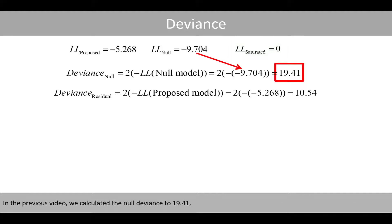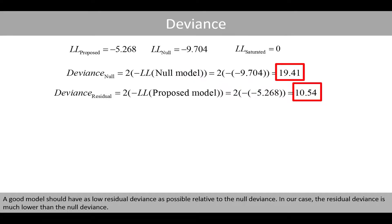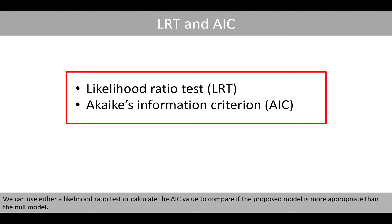In the previous video, we calculated the null deviance to 19.41 and the residual deviance to 10.54. A good model should have as low a residual deviance as possible relative to the null deviance. In our case, the residual deviance is much lower than the null deviance. We can use either a likelihood ratio test or calculate the AIC value to compare if the proposed model is more appropriate than the null model.